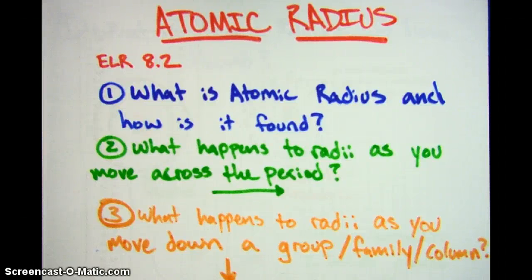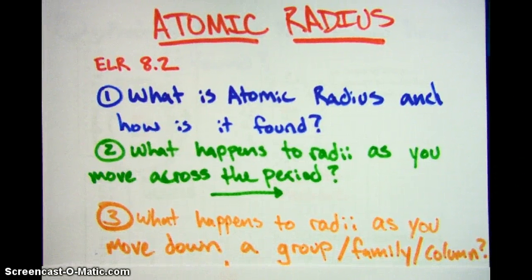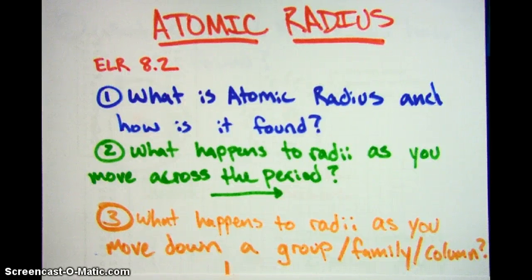This video is for Atomic Radius, ELR 8.2. In this video, I'm going to be showing you what an atomic radius is and how scientists determine what that is. Number two, what happens to the radius as you move across the period on a periodic table, so from left to right. And finally, what happens to the radius as you move down, so from top to bottom, on a group or family.